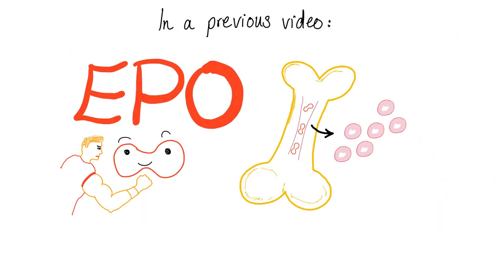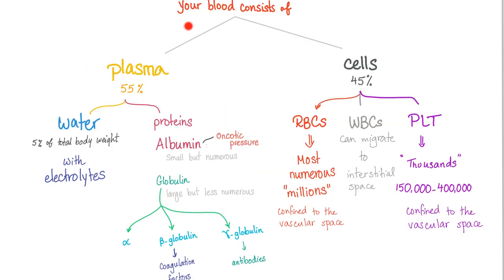In a previous video in my hematology playlist, we discussed EPO — erythropoietin — but today let's talk about T-Po. As you know already, your blood consists of plasma and cells. The cells are red blood cells, white blood cells, and platelets. White blood cells are the only cells that can migrate to the interstitial space. Red blood cells and platelets are confined to the vascular space.